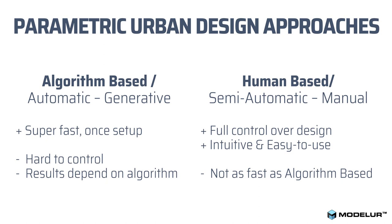On the other hand, the semi-automatic or human-based approach is a bit slower, but still a lot faster than doing everything completely manually, and it gives you a much higher level of control over design and quality. It's also easier to use and more intuitive, as it is closer to how urban designers usually work. When it comes to speed, it cannot compete with the generative approach, but it's up to the designer to decide which approach to use.